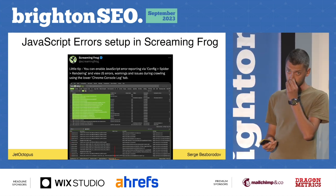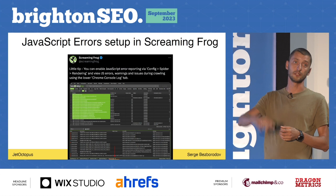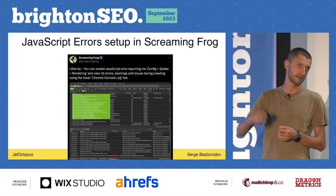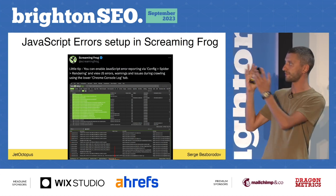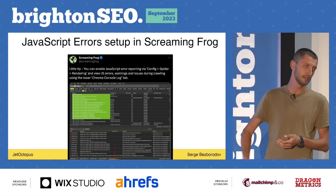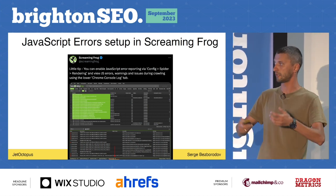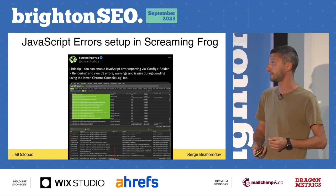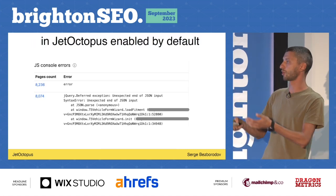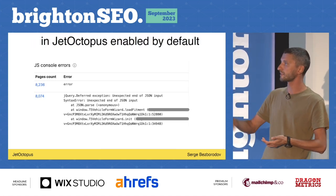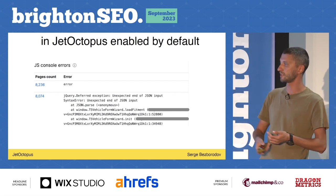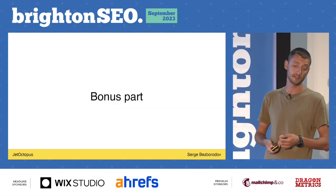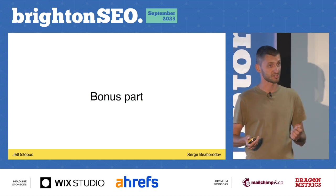JavaScript errors setup in Screaming Frog: in Google Developer Tools we have JavaScript errors — Screaming Frog can gather those errors too, and it's very helpful after you crawl as many pages as you can. In JetOctopus it's enabled by default, and you can always get back to them and analyze.